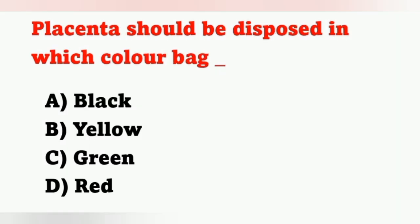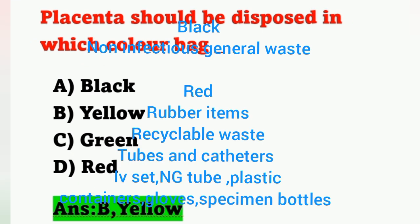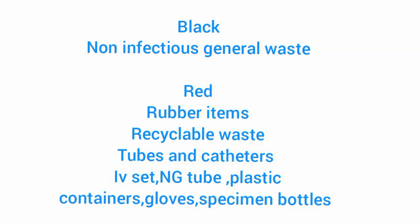Next question: Placenta should be disposed of in which color bag? Options: A) Black, B) Yellow, C) Green, D) Red. From biomedical waste management: human and anatomical waste such as amputated parts, human tissue, placenta, blood-related waste, blood bags, soiled dressings are kept in the yellow bag. Option B is correct. Non-infectious general waste like food waste, paper, and water bottles go in the black bag. Recyclable waste like rubber tubes, catheters, IV sets, NG tubes, plastic containers, and gloves go in the red bag.